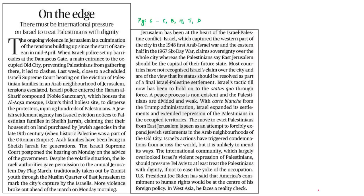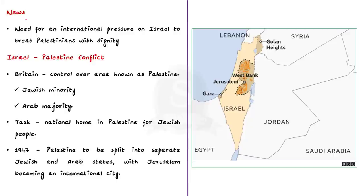The next article discusses the need for international pressure on Israel to treat Palestinians with dignity. After World War I, Britain took control over Palestine, an area inhabited by a Jewish minority and an Arab majority. The international community gave Britain the task of establishing a national home in Palestine for Jewish people, which later led to clashes between the Arab majority and the Jewish minority, as both claimed the land.